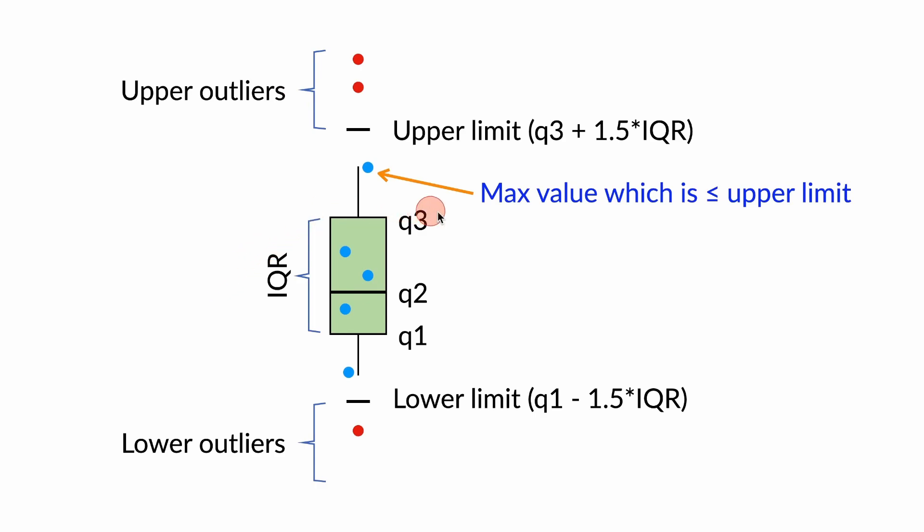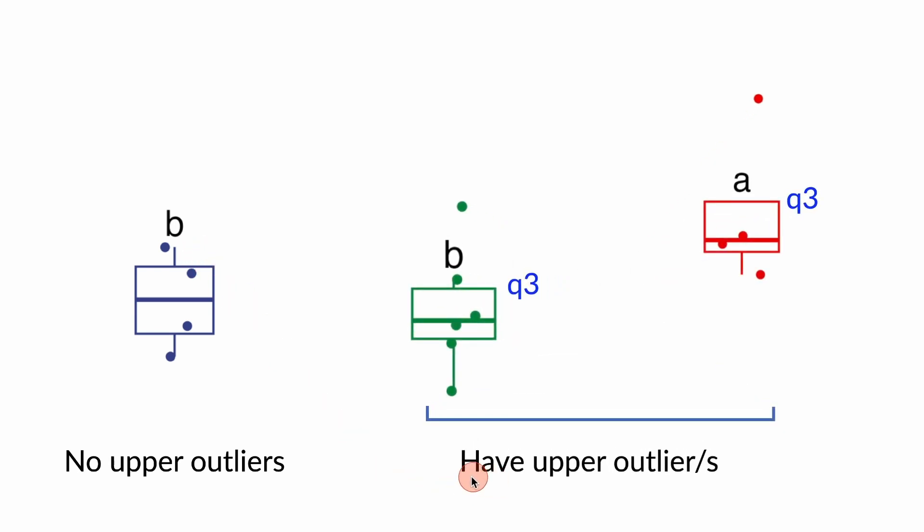Because the upper whisker of the boxplot represents the max value of the data, which is less than or equal to the upper limit. Therefore, there are three cases. The whisker is the max value of the data if there are no upper outliers. We want the compact letters sit right on this whisker in this case. When there are upper outliers, the whisker shows the max value that is less than or equal to the upper limit. This situation has two types. The whisker is higher than the box or third quartile, and the whisker is shorter than the third quartile. The compact letters should sit right above the whisker for the first type, but right above the box or third quartile for the latter.